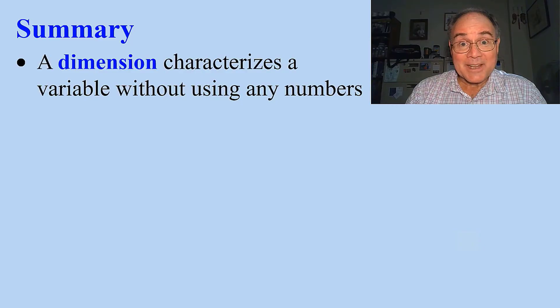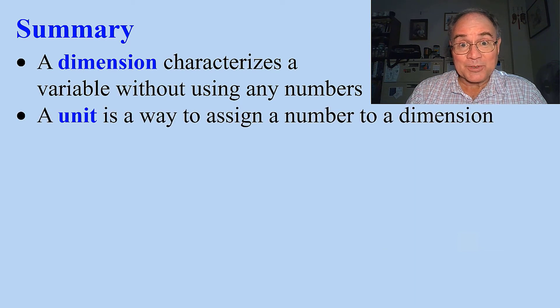In summary, a dimension characterizes a variable without using any numbers. A unit is a way to assign a number to a dimension.